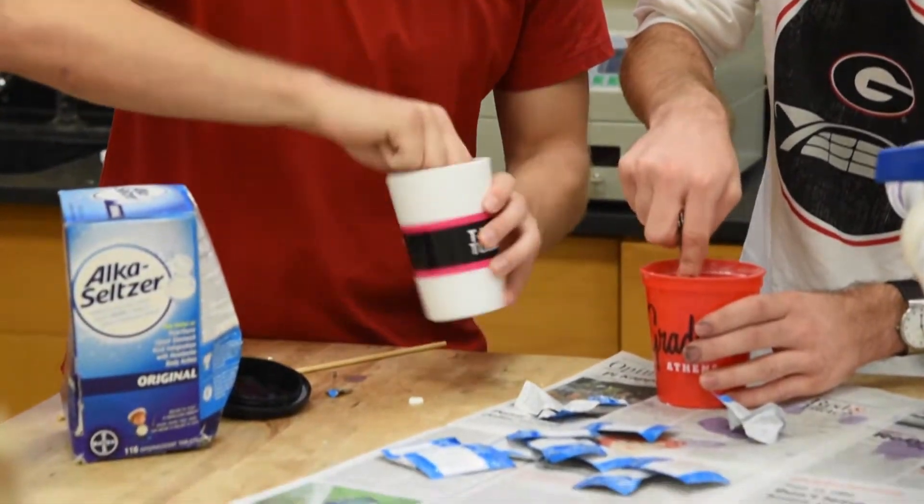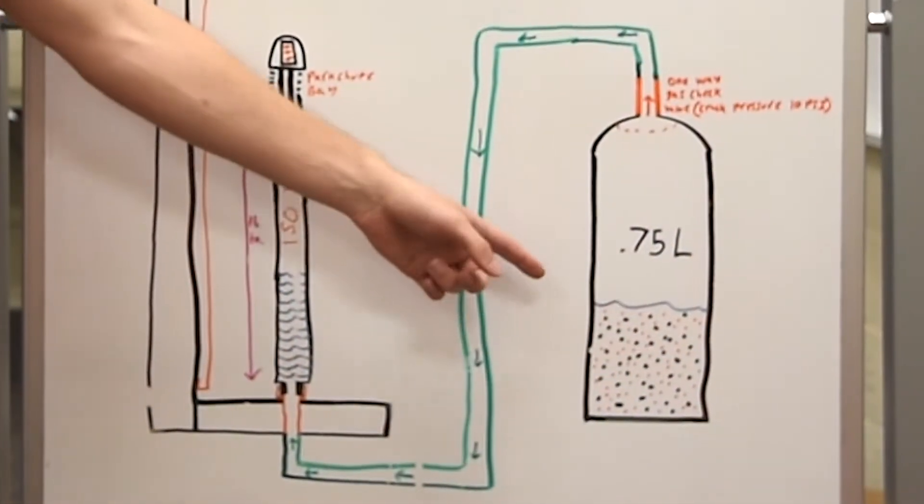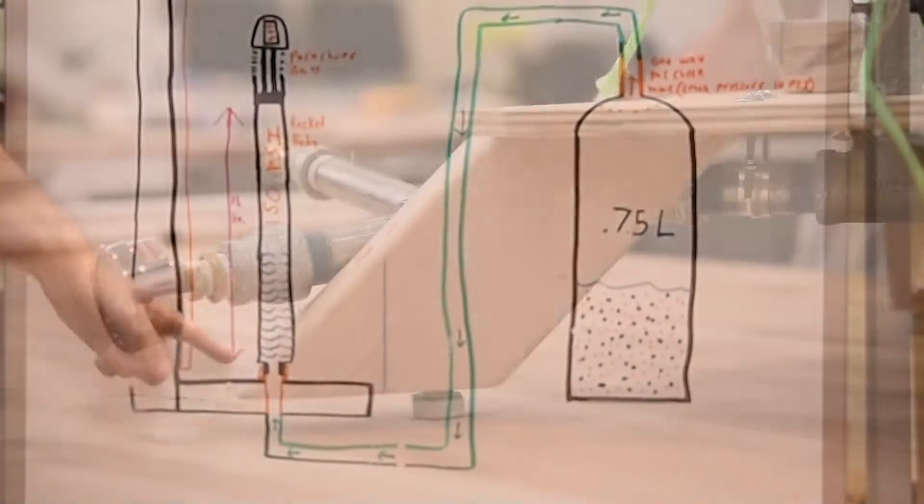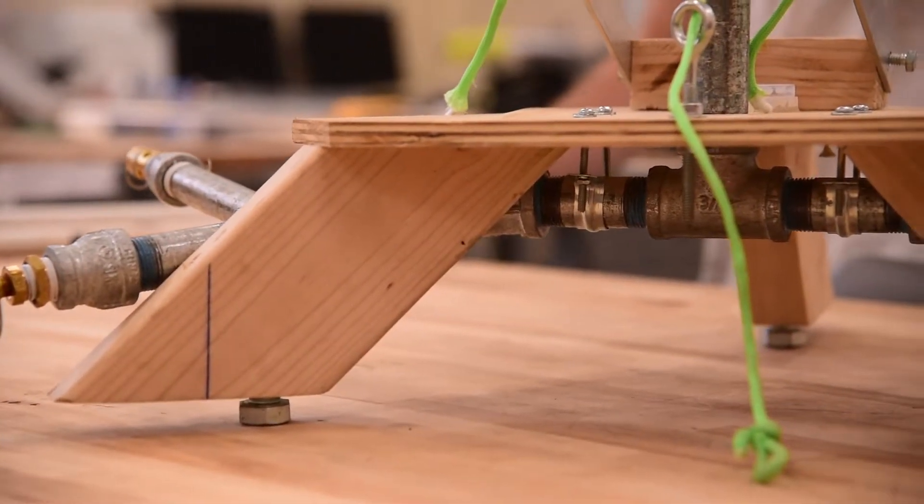First, water and crushed up Alka Seltzers react in a pressure chamber allowing CO2 to escape into a hose. The hose is attached to the launcher's piping system.